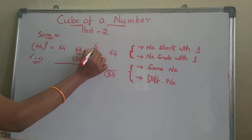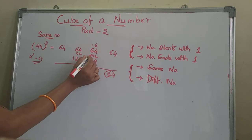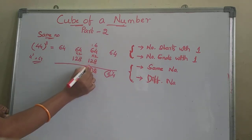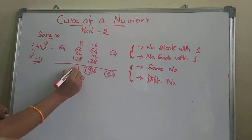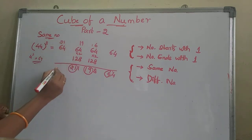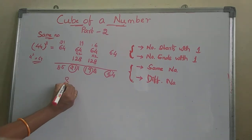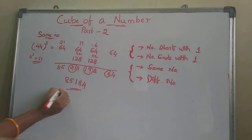Take 6 as a carry. 3 plus 18 gives 198 — take 19 as a carry. This gives 211 — take 21 as a carry. The remaining numbers are 8, 5, 1, 8, 4. So 44 cube is 85184.